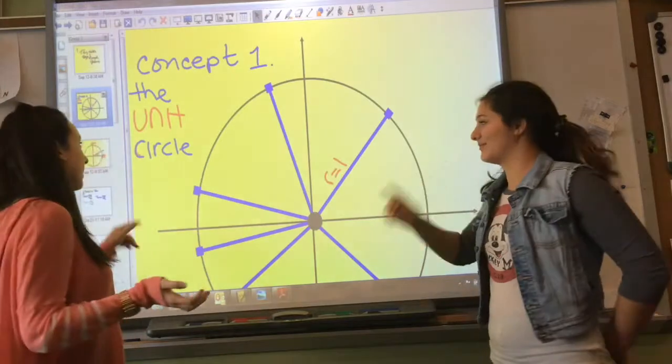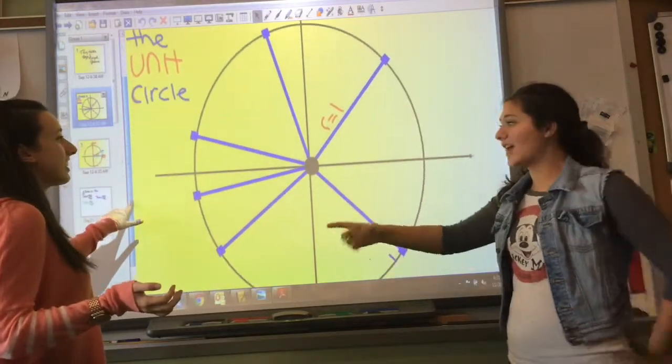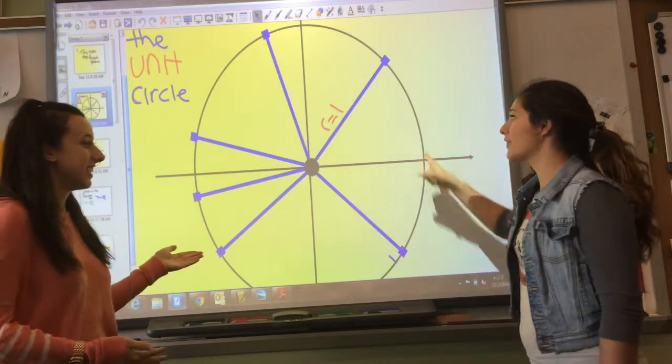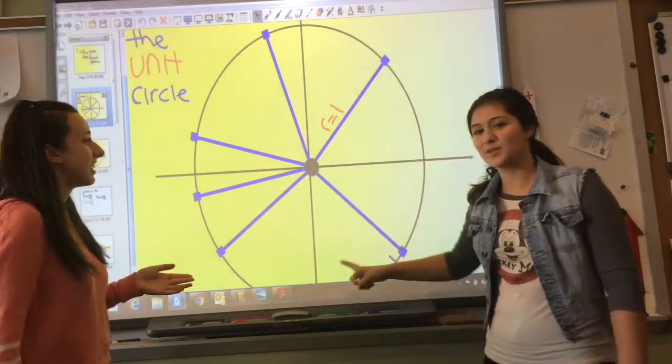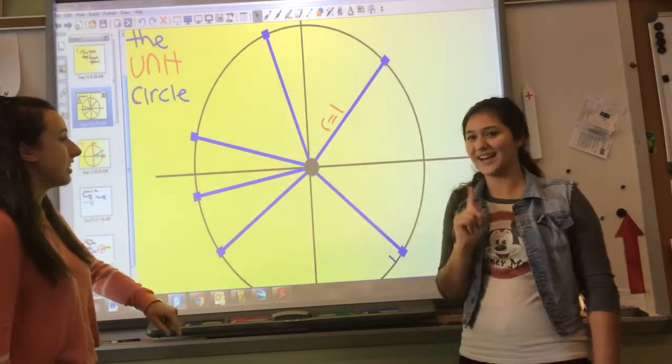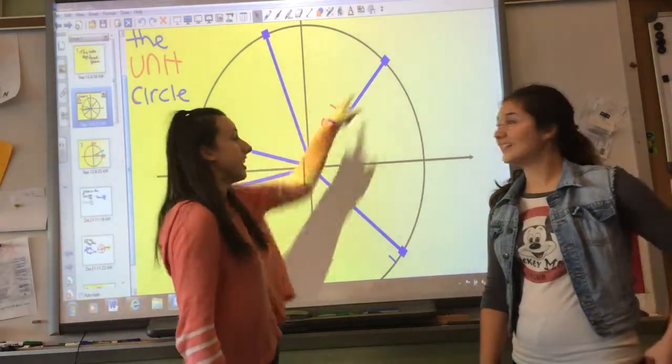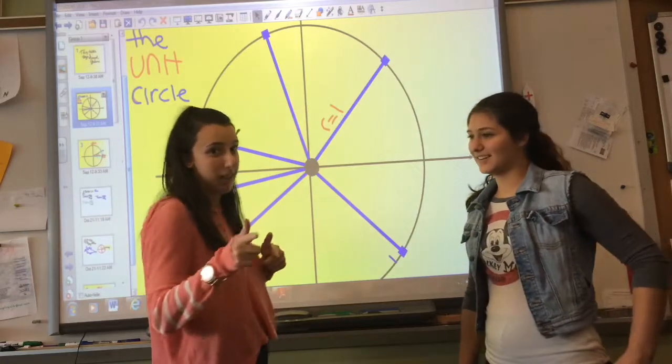First we have to start with a unit circle. A unit circle is a circle where at any place on the circle, the radius is one, and always one. So this line is always going to be one, and this line is always going to be one, and this line is always going to be one.